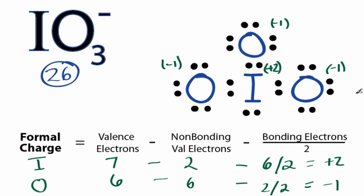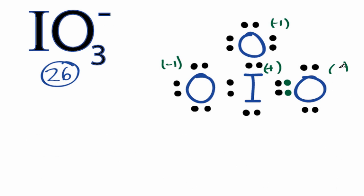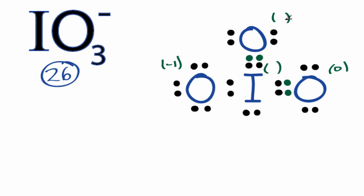We really want our formal charges to be as close to zero as possible, while still retaining the overall negative one charge. To do that, we can form a double bond with one oxygen by moving these valence electrons and sharing them with the iodine. That results in a formal charge of zero on that oxygen and plus one on the iodine. Let's form another double bond between the next oxygen and the iodine. When we do that, this oxygen has a formal charge of zero, and now the iodine has a formal charge of zero.